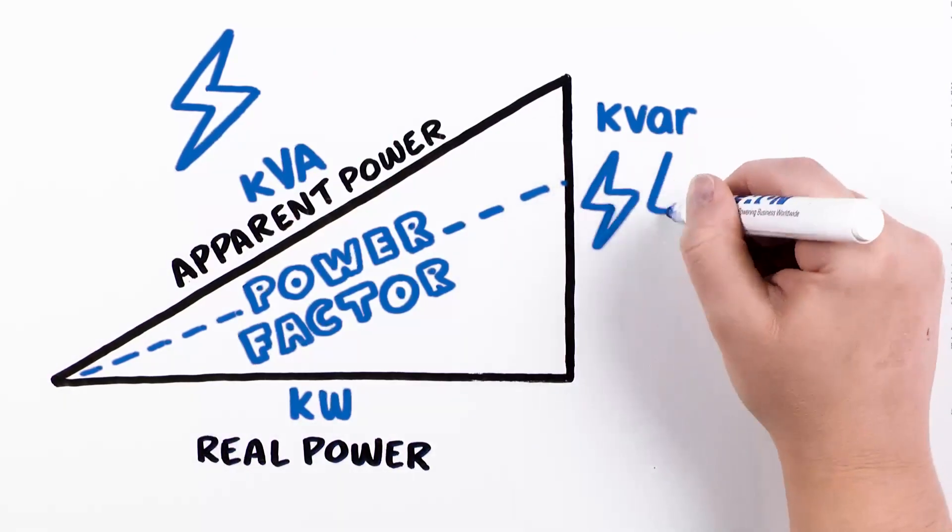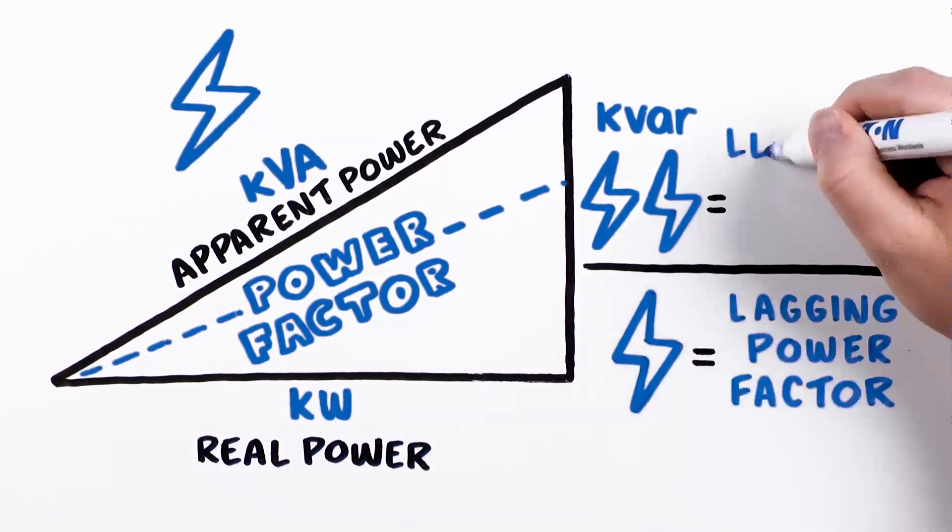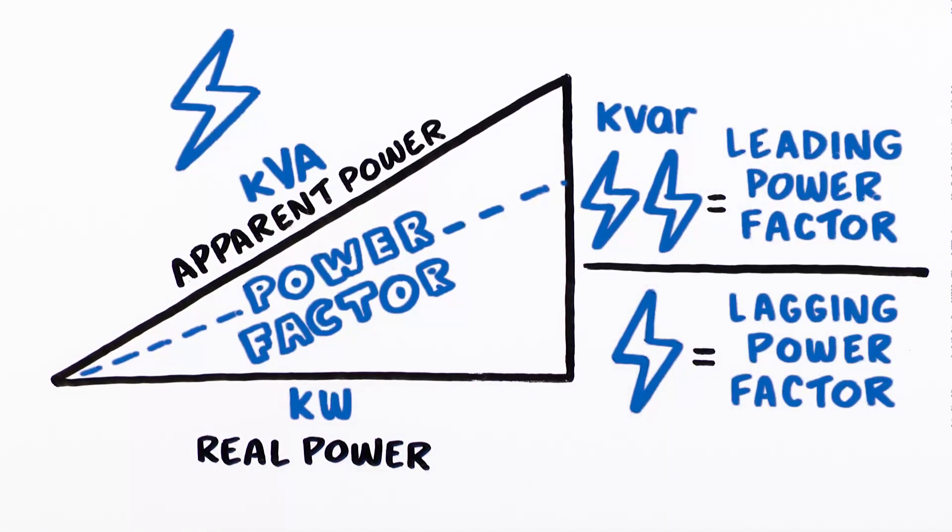Too much KVAR, however, can be problematic as the system can go from lagging power factor to leading power factor through overcorrection.